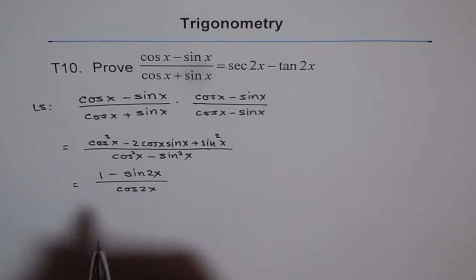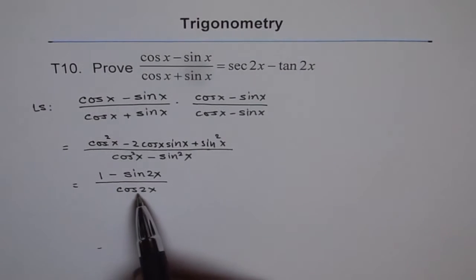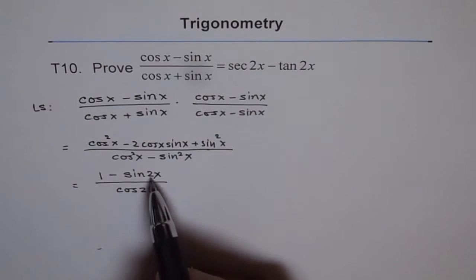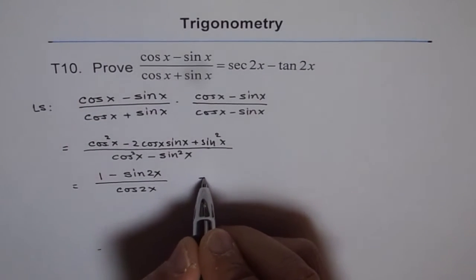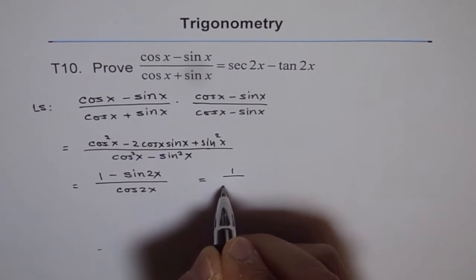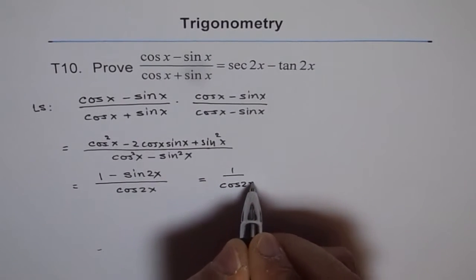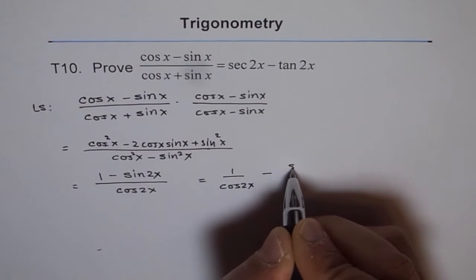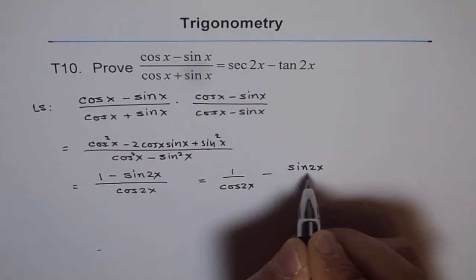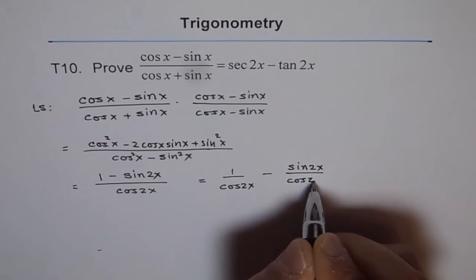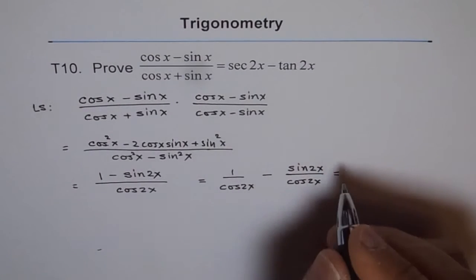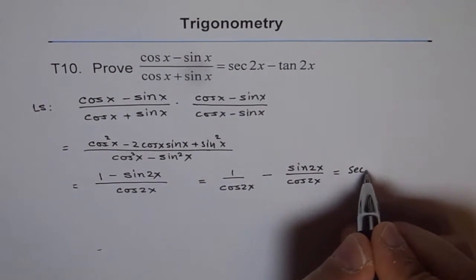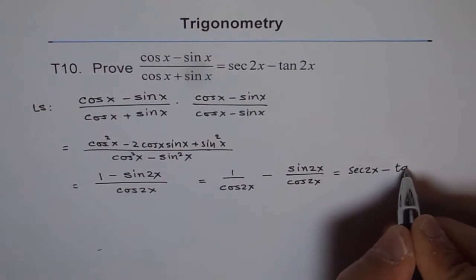Now we get our result. 1 over cos 2x is secant 2x and sine 2x over cos 2x is tan 2x. So we'll write this as 1 over cos 2x minus sine 2x over cos 2x, which equals secant 2x minus tan 2x. And that is the right side.